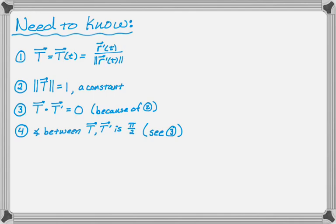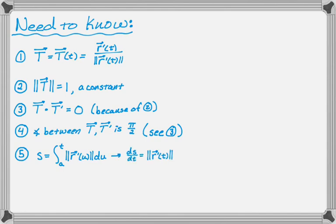The next thing — this is just background info — arc length s is the integral from a, some arbitrary starting point, to t of the magnitude of r prime of u du, where u is just a dummy variable. Specifically, by the second fundamental theorem, ds/dt — the rate of change of arc length with respect to time — is just the magnitude of r prime of t, which is really the speed.